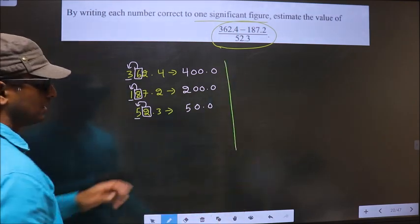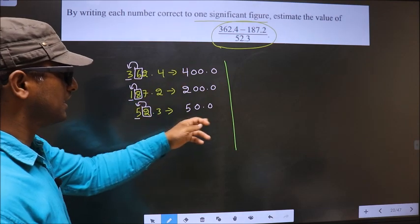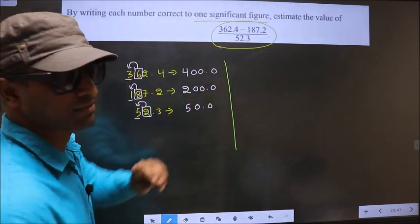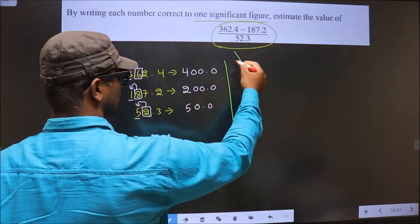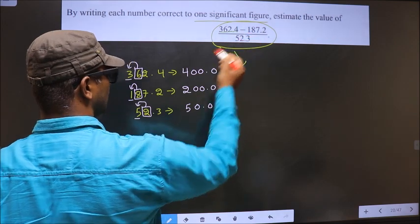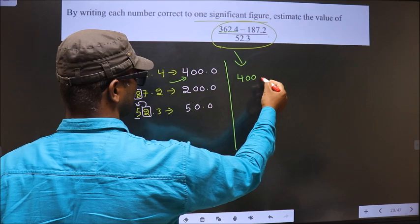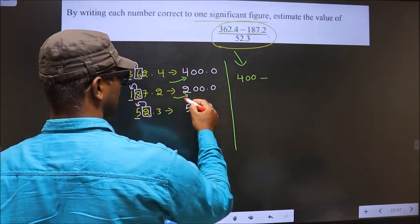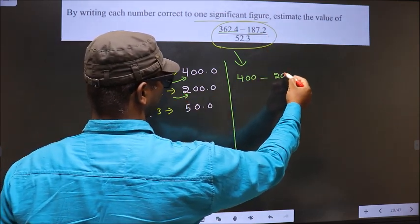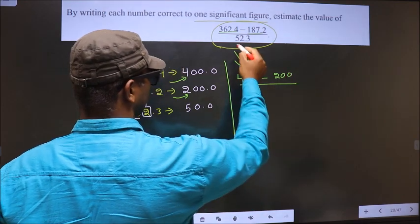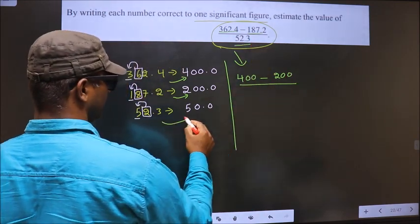So now, we should make use of these values over here. So now this will change to 400, minus this will change to 200, divided by this will change to 50.